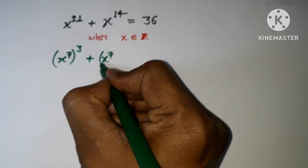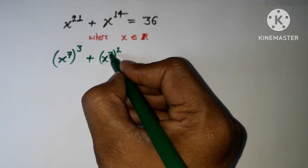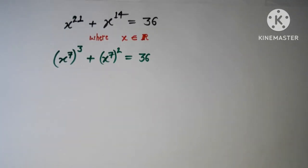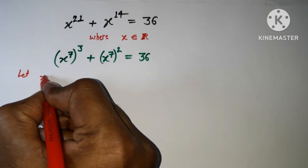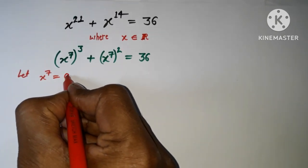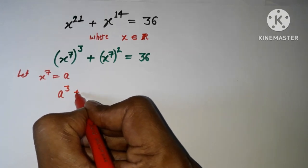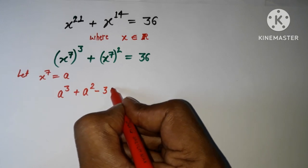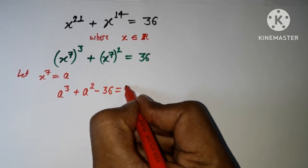And here, x to the power 7 raised to the power 2 gives x¹⁴. So I have the equation rewritten. Now I consider x to the power 7 as a new variable, a. So I have a cubed plus a squared equals 36, and I move 36 to the left side, giving me a³ + a² − 36 = 0.